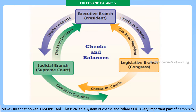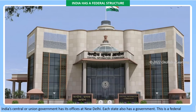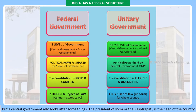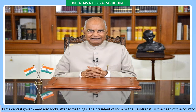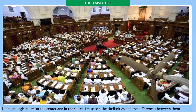This is a very important part of democracy. India has a federal structure — India's central or union government has its offices at New Delhi. Each state also has a government. Federal means a system of government in which the states in a country look after their own affairs, but a central government also looks after some things. The President of India (Rashtrapati) is the head of the country; similarly, the Governor (Rajyapal) is the head of a state. There are legislatures at the center and in the states.